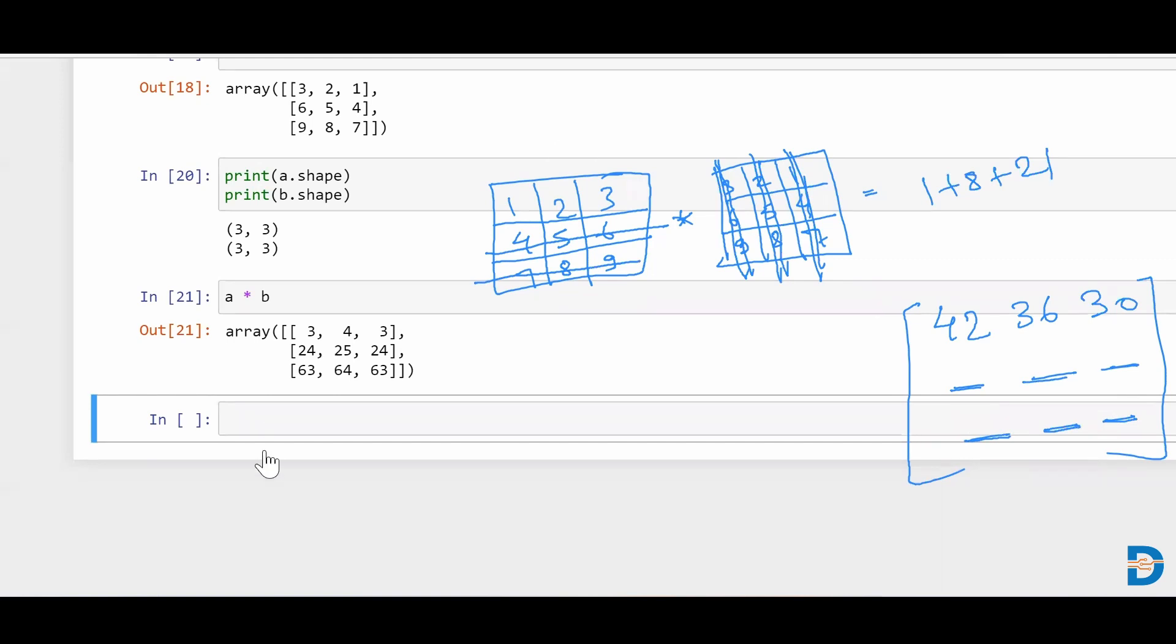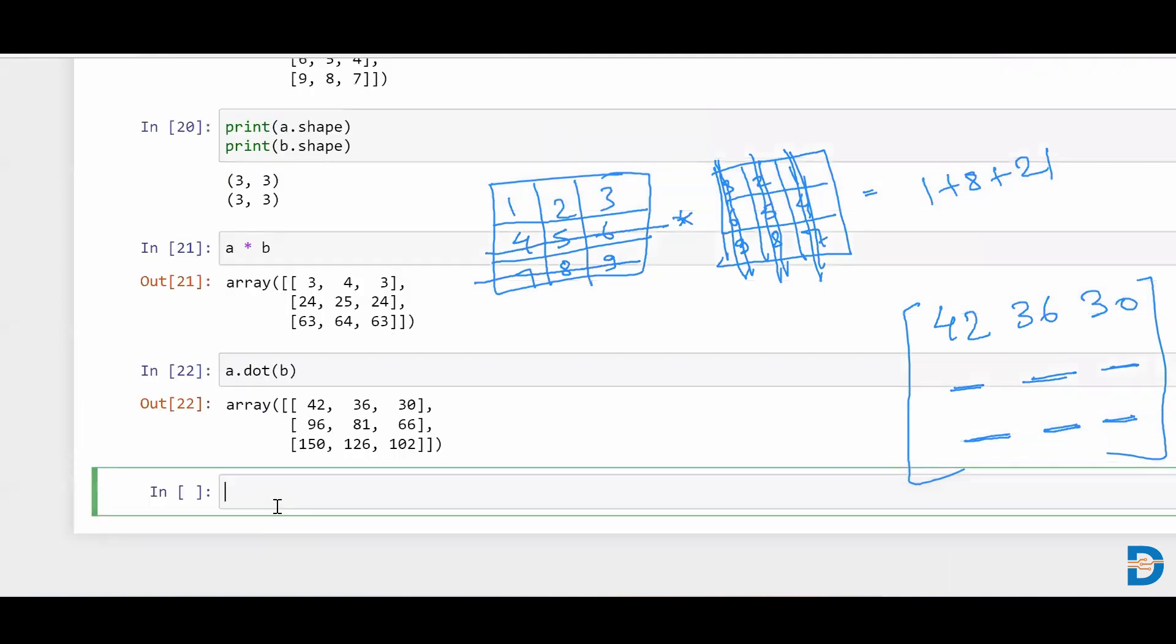So if I simply say, we take the matrix A, and we say dot B, run it, and you could see that 42, 36, and 30. This thing has got printed.